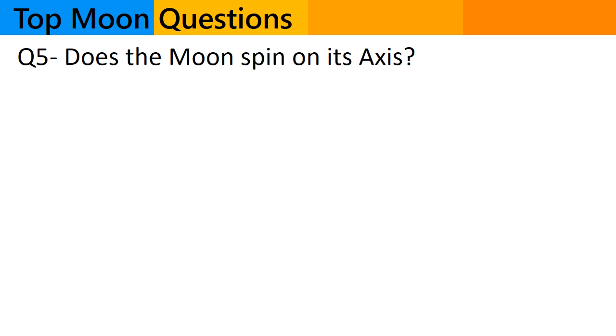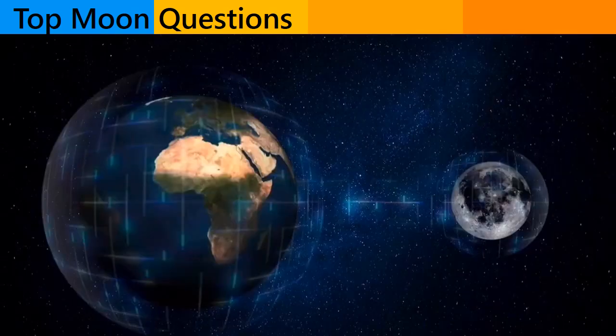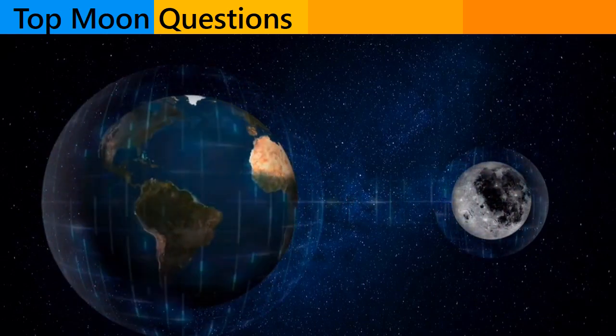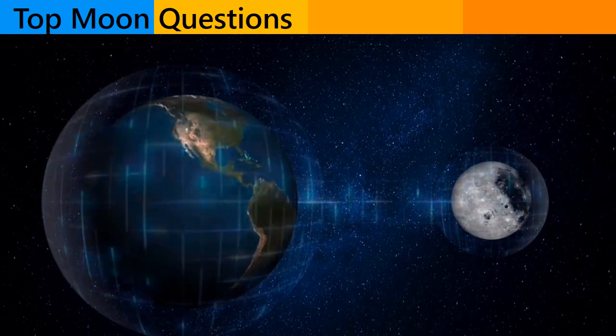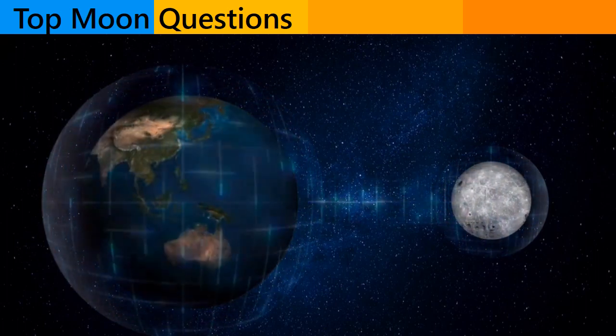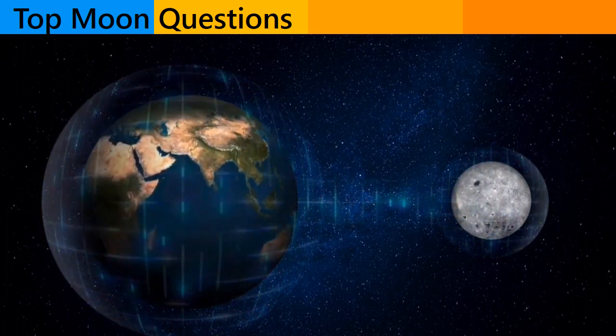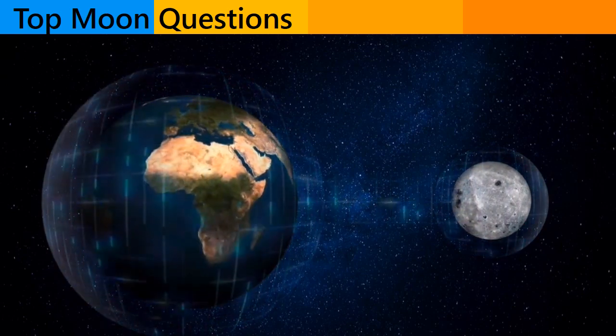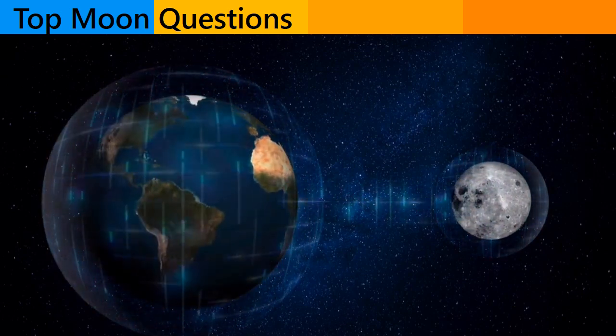Question number 5. Does the moon spin on its axis? Yes, the time it takes for the moon to rotate once on its axis is equal to the time it takes for the moon to orbit once around earth. This keeps the same side of the moon facing towards earth throughout the month.